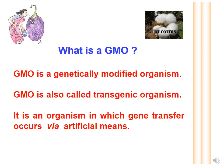First of all, let us discuss what is a GMO. GMO stands for Genetically Modified Organism. They are also called transgenic organisms because genetically modified organisms are those organisms in which gene transfer has taken place through artificial means.